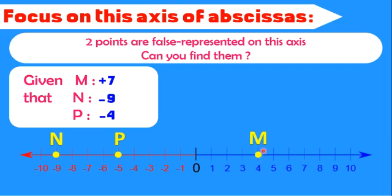We must put it here on plus 7. What about N? It must be on minus 9. Yes, N is located on minus 9. It's true. Let's move to P. P is on minus 4. Is it on minus 4? No, it is on minus 5, so it must be here on minus 4.